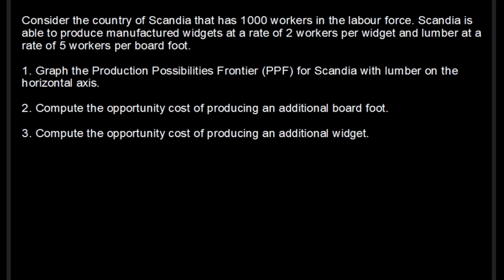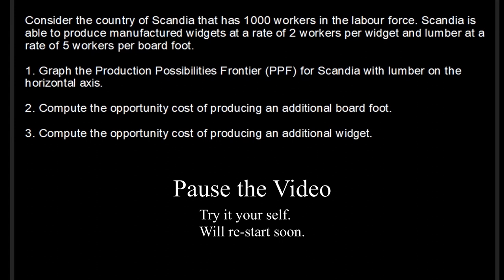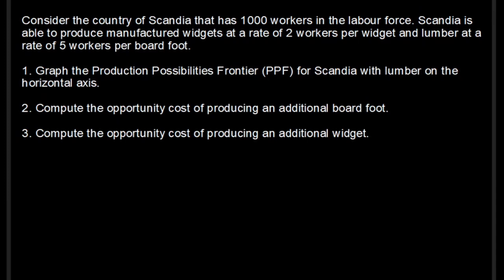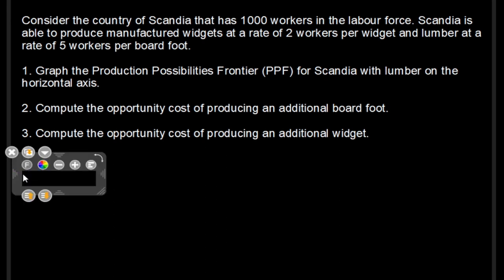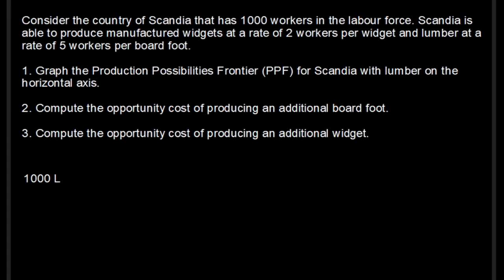So we have our scarce resource of workers and we have our absolute cost of production. That is how much of that resource we have to give up in order to produce our good or service. First thing I'd want to do with this question is start to take the big pieces of information available here and write them down separately so that I can access it later. So, big pieces of information, what do we have here? We have a thousand workers in the labor force. So, let's take that. Let's go and get that guy so that we can just refer to that directly. So, we have one thousand workers.